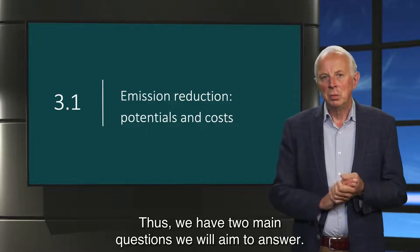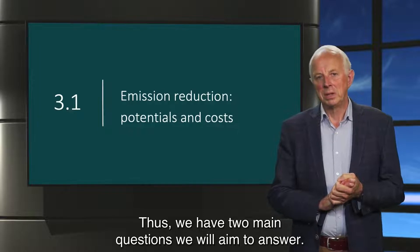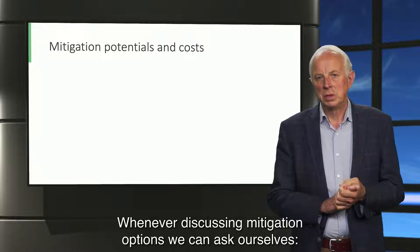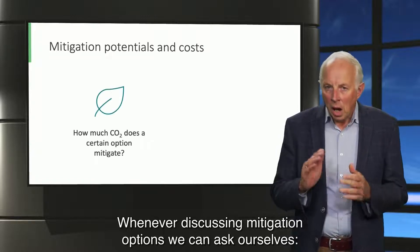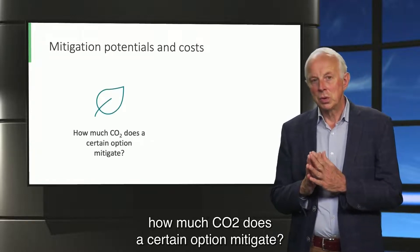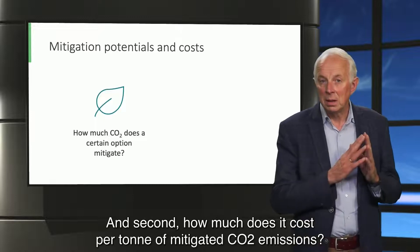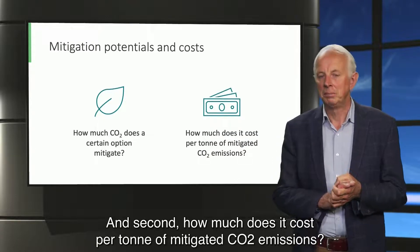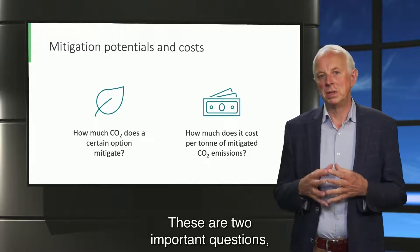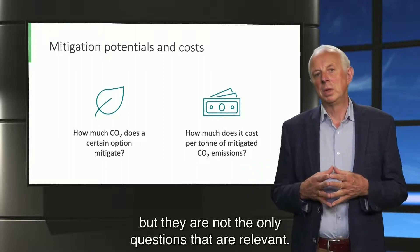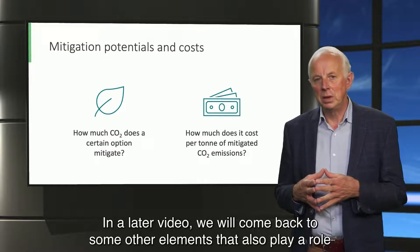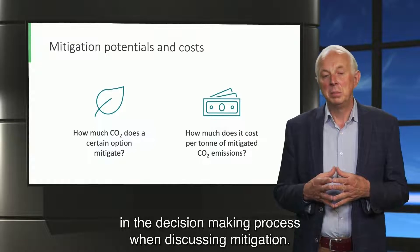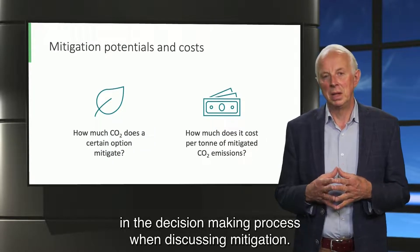We have two main questions we will aim to answer. Whenever discussing mitigation options we can ask ourselves: how much CO2 does a certain option mitigate, and second, how much does it cost per ton of mitigated CO2 emissions? These are two important questions, but they are not the only questions that are relevant. In a later video we will come back to some other elements that also play a role in the decision-making process when discussing mitigation.